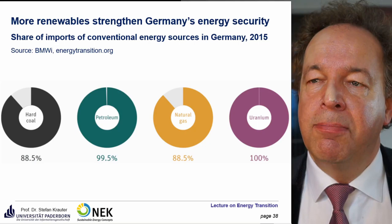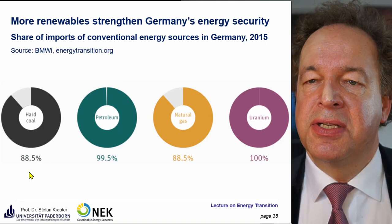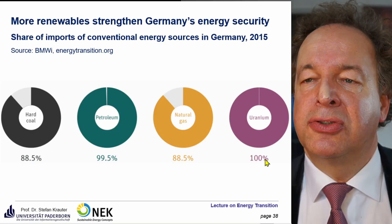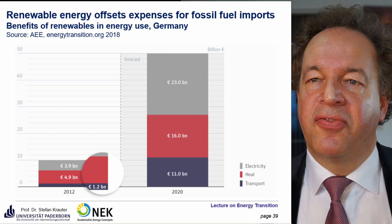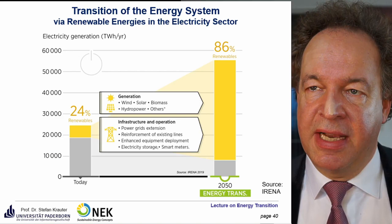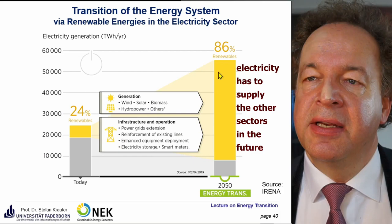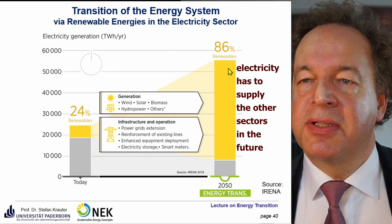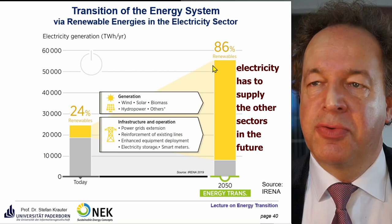Germany's dependency on imported energy: hard coal 88.5% imported, petroleum 99.5%, natural gas 88.5%, and uranium 100% imported. The government's aim is to increase renewables — already happening — across different sectors. The electricity sector will see increasing demand due to electrification of other energy sectors, to be filled by renewables.